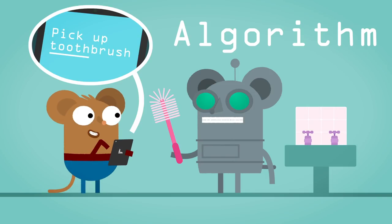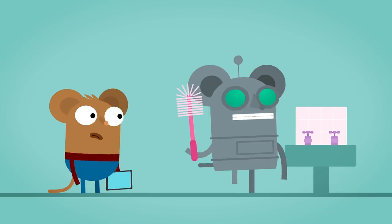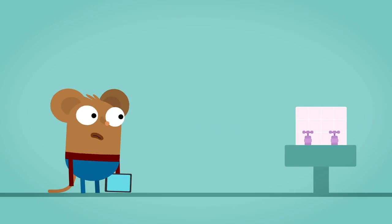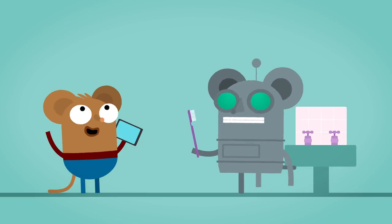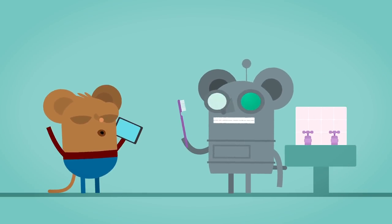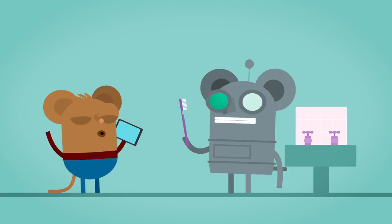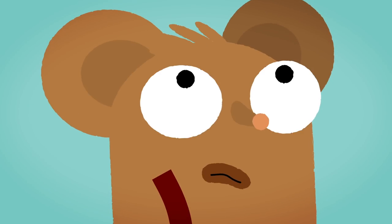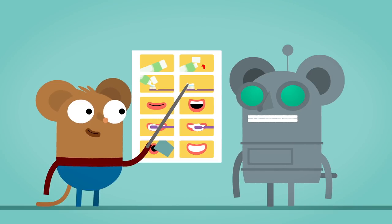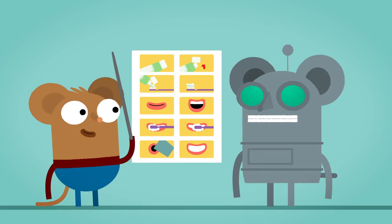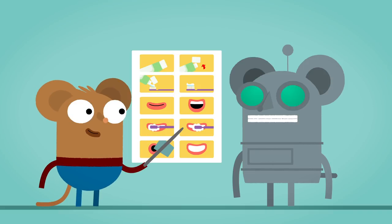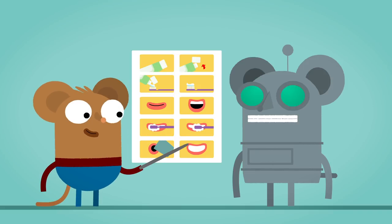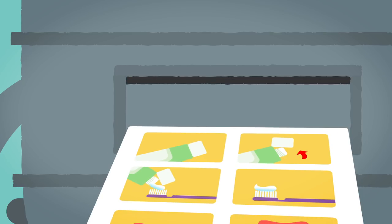Pick up toothbrush! An algorithm is a list of steps you give to computers to solve a problem or get something done. Imagine that you need to show someone how you brush your teeth so they can learn how to do it themselves. You would need to explain all the little steps you do in the right order so they can understand how to do it without getting confused.